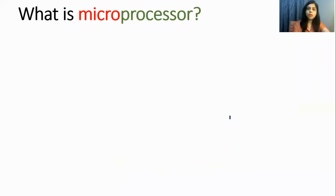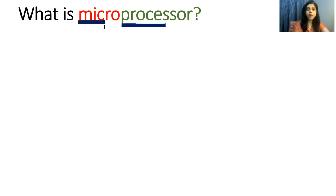So what is a microprocessor? There are two words: one is 'micro' and one is 'processor.' Micro means something very, very small. Processor means it is like our brain — just how our brain processes data and information, this processor also processes data and information.